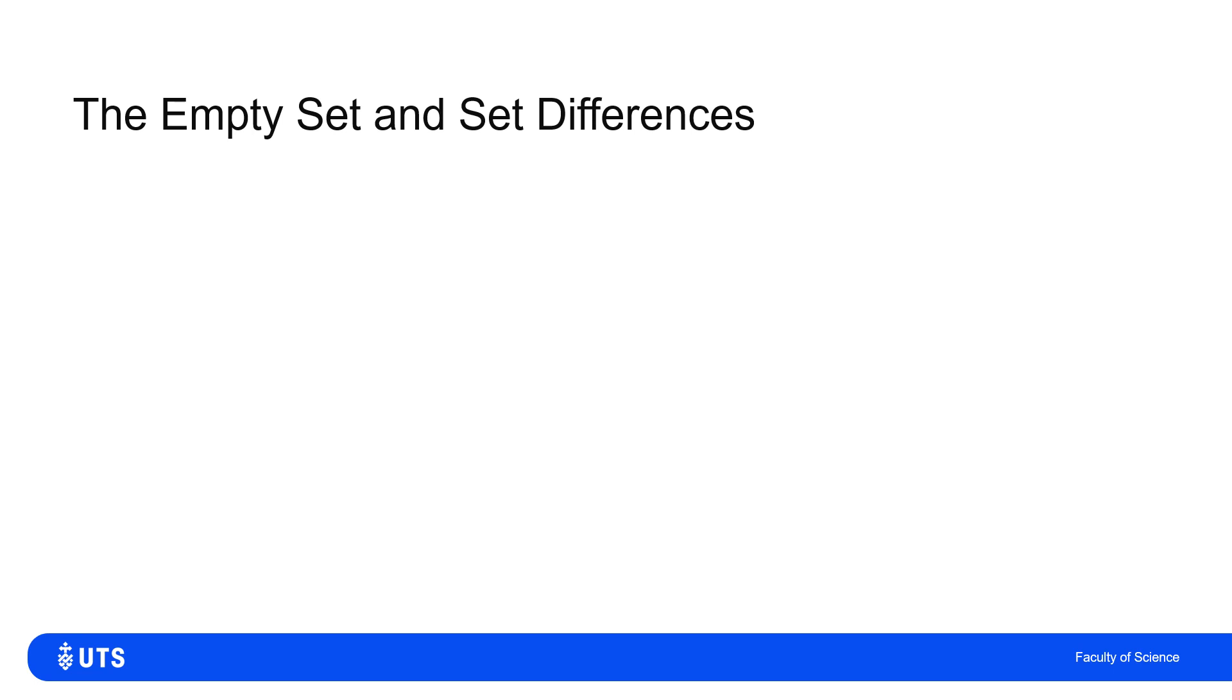When we introduced the definition of a set, we just said that it was a collection of elements. Now, it is possible to have a set with no elements, and we call that the empty set. There are two different ways of denoting the empty set. One involves opening a set with a curly bracket and immediately closing the set with an opposite curly bracket. So we open the set and we close the set, and we put no elements in. Or more commonly, we'll denote the empty set with a circle with a diagonal line through it, the set with no elements.